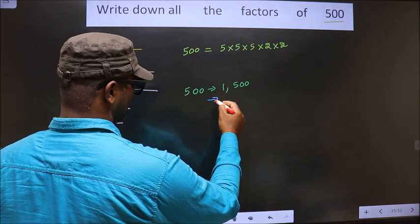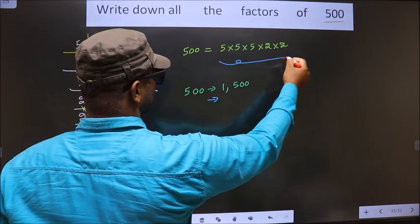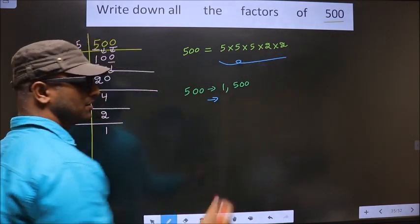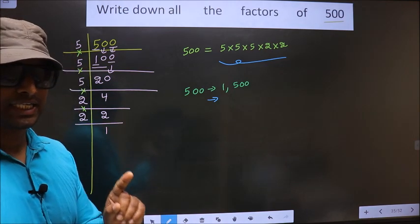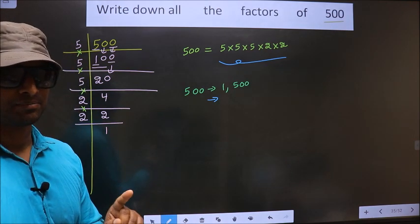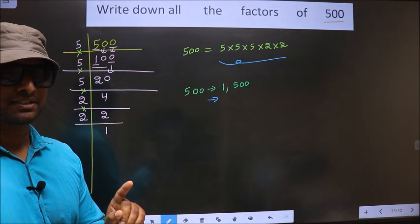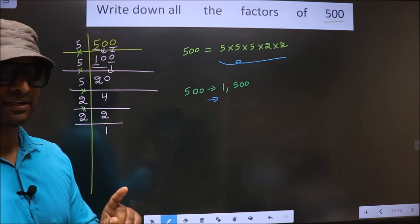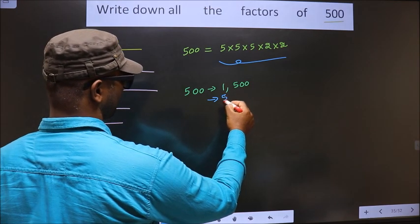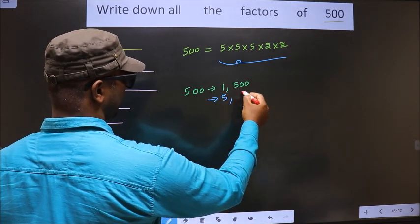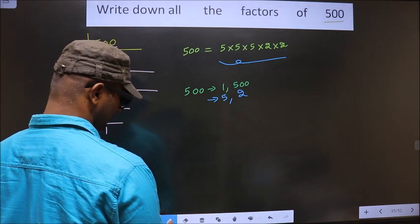Now, from these prime factors, if you select 1 different number at a time, how many numbers do we get? We get 5 and 2. That's it.